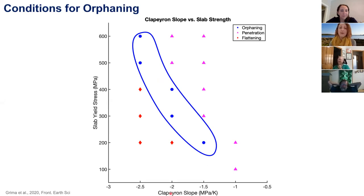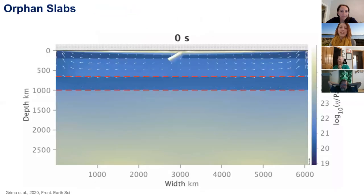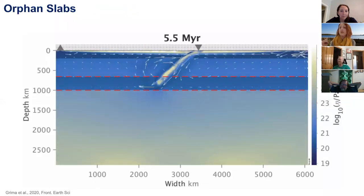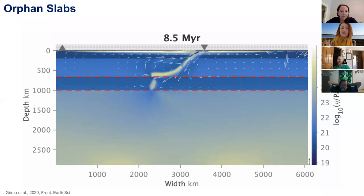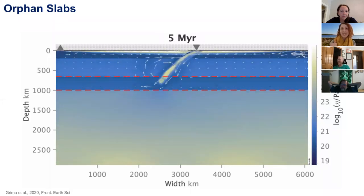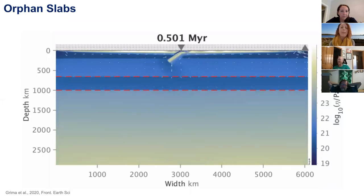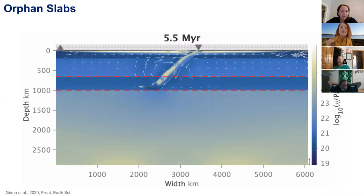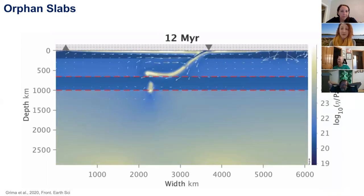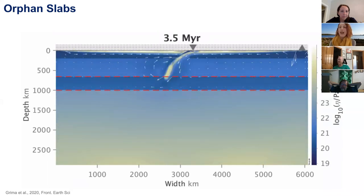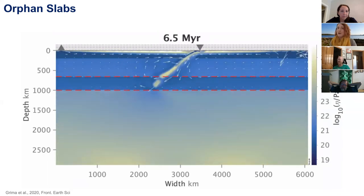For the first time, we can fill that space with a new behavior which we term slab orphaning. Slab orphaning is when the slab sinks into the lower mantle, penetrates below 660 km depth, and breaks directly at the top of the lower mantle.